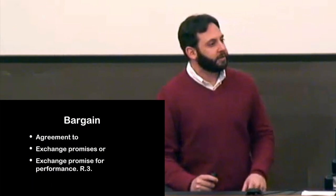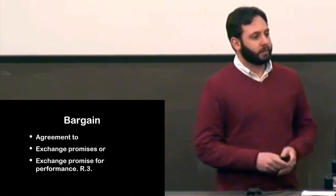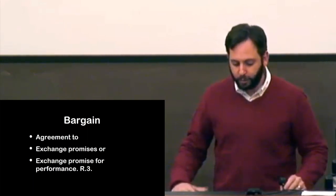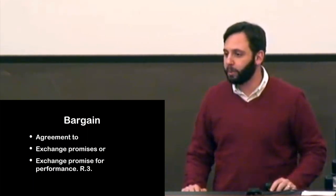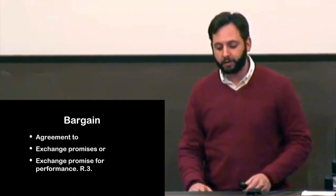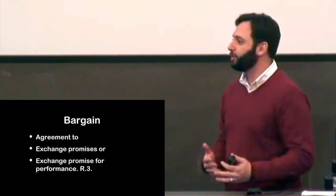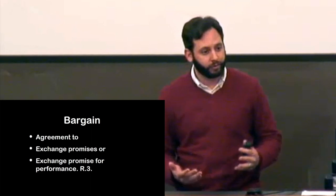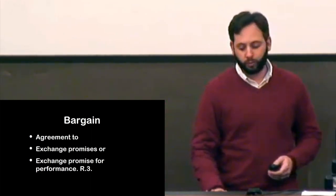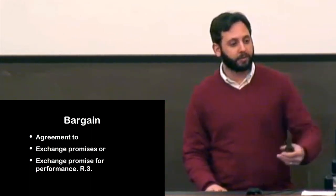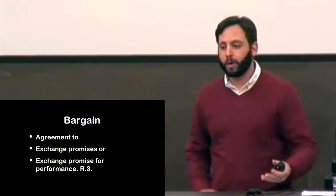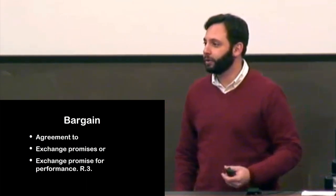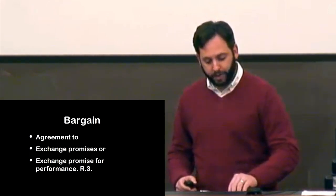What are the parties assenting to? They're assenting to a bargain. A bargain is an agreement to make an exchange — to exchange promises: a promise for a promise, a promise for performance, or mutual performances. Usually we're going to be looking at mutual promises. For example: I promise to sell you my car on Thursday if you promise to pay me $10,000 when I deliver the vehicle — an exchange of mutual promises that was actually sought for.